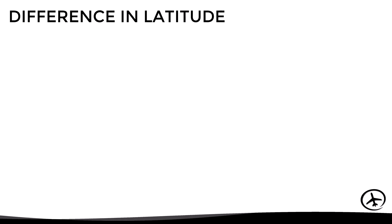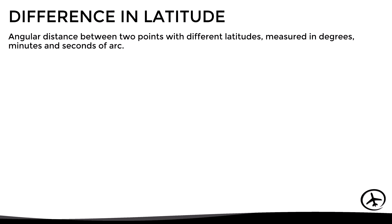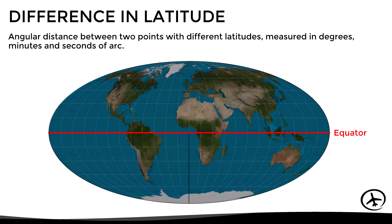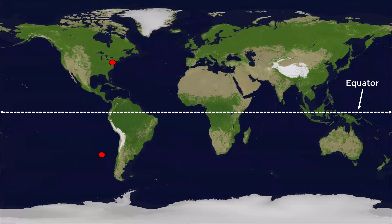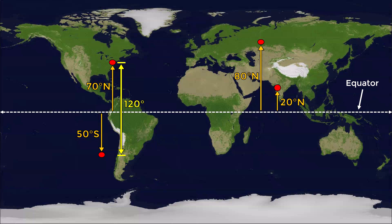The difference in latitude refers to the angular distance between two points with different latitudes, measured in degrees, minutes, and seconds. In other words, the difference in latitude refers to how far apart two points are in terms of latitude. For example, here we have two points with different latitudes, 70 degrees north and 50 degrees south — in this case the difference in latitude would be 120 degrees. In another case where the latitudes are 80 degrees north and 20 degrees north, the difference in latitude would be 60 degrees.